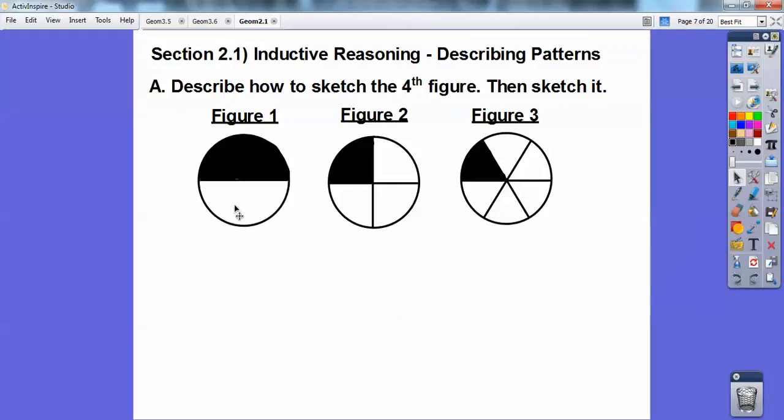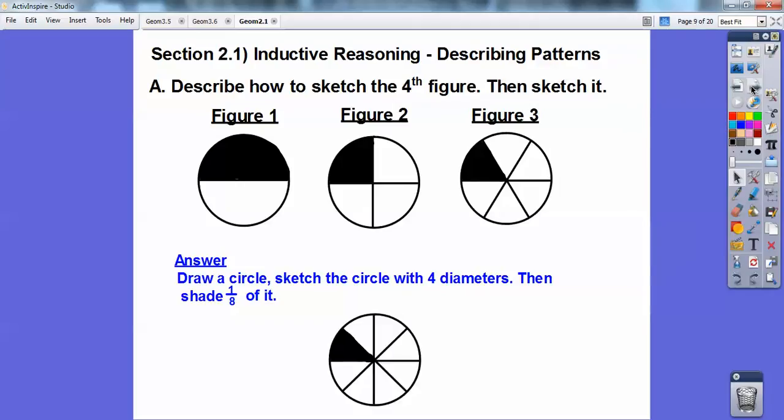Well, that's not helping me. How about this, you guys? Here's a diameter, one diameter. Here's one that has two diameters cutting it up into equal pieces. Here's one that has three diameters cutting it up into equal pieces. So it looks like they're going diameter one, diameter two, diameter three. So I'm going to make one with four diameters, which is going to make eight equal pieces. So I'm going to draw a circle, sketch the circle with four diameters, and then shade one-eighth of it. So there we go, right there. There's four diameters, and I've shaded just one of them.